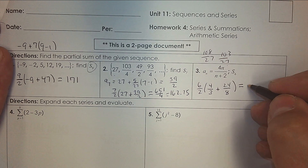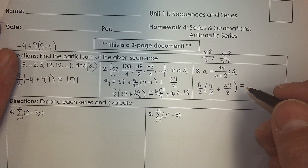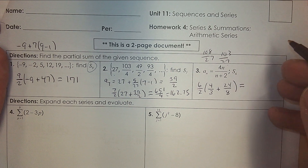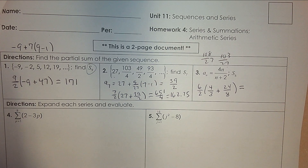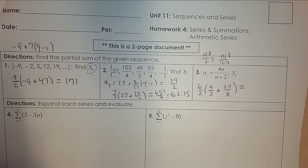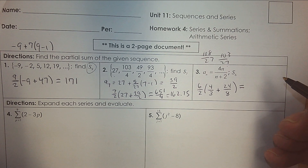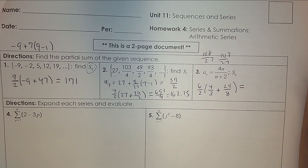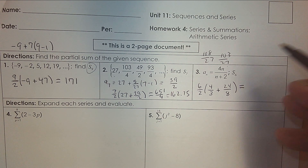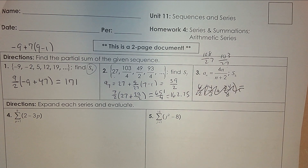For number three, it says add the first six terms together. So I know there are six terms divided by two. The first term — plug in one — and you get four over three. The last term — plug in six — and you get 24 over eight, which is also three. The last one is obviously not arithmetic. We can only use the series formula if it is arithmetic — if it's linear.